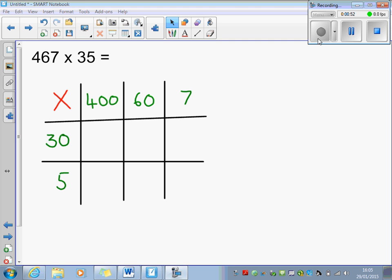I would then move on to working out my first box. So I would do 4 times 3 to make 12. I would then count the zeros in 430, so I would add three additional zeros to make 12,000.